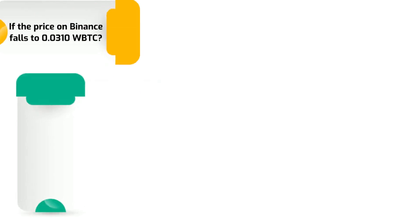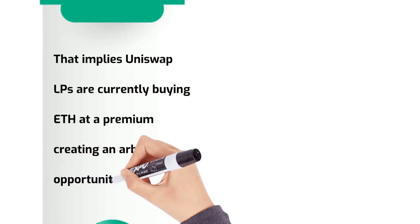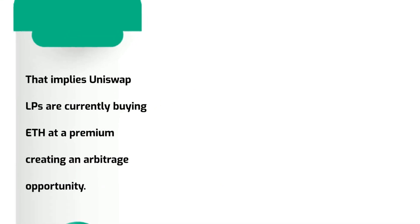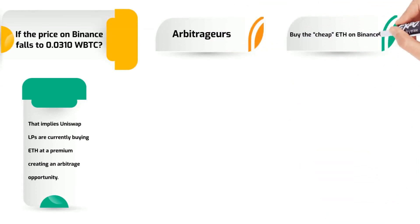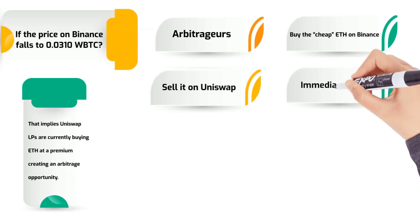To explore an example, what happens if the price on Binance falls to 0.0310 WBTC? That implies Uniswap LPs are currently buying Ethereum at a premium, creating an arbitrage opportunity. As a result, arbitrageurs buy the cheap Ethereum on Binance and sell it on Uniswap for an immediate profit.